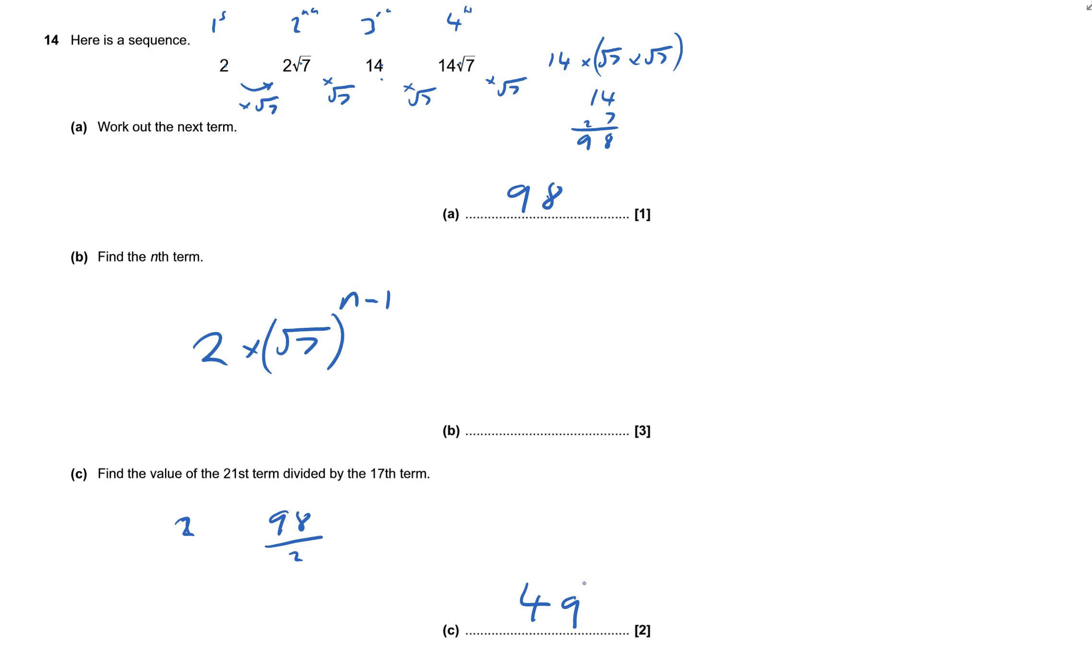21st is equivalent to 98 divide by 2, which is 49. This only works because it's a geometric thing, because when I divide them, the twos will cancel out, so it's just what I have to times by.